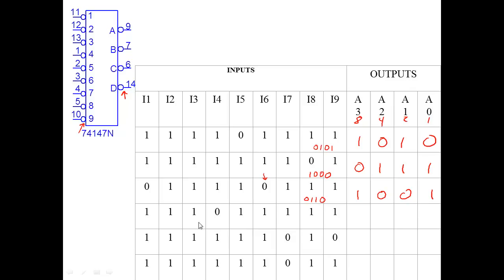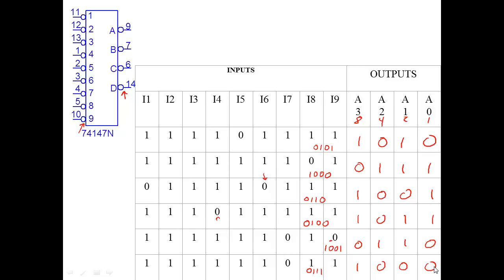Pause the video and try the last ones yourself. For the remaining examples: the four input gives binary 0100, inverted to 1011. Where two inputs are tied low, the highest is nine — binary 1001, inverted to 0110. The seven input gives binary 0111, inverted to 1000. Hopefully you got those — pretty straightforward.